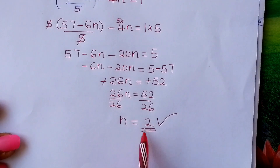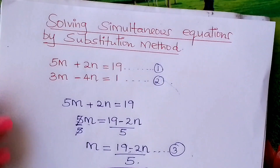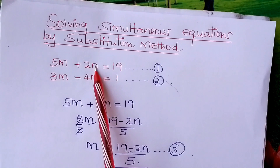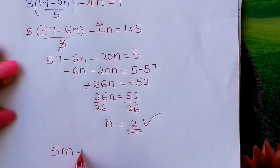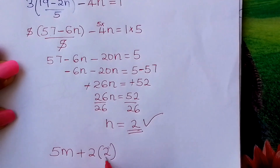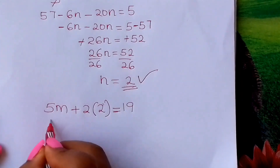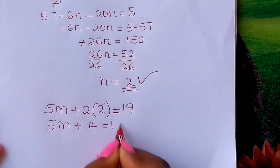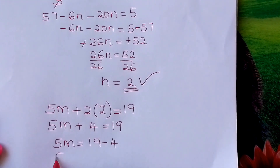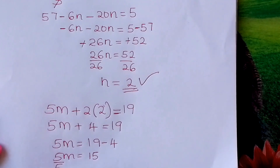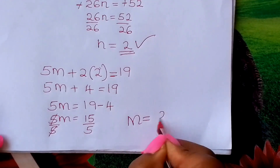From there, how do you find m? Substitute n into the first equation. Where you had n, fix 2. So: 5m plus 2 times 2 equals 19, which gives 5m plus 4 equals 19. So 5m equals 19 minus 4, which is 15. Divide by 5 on both sides — 5 cancels out — and therefore m equals 3.